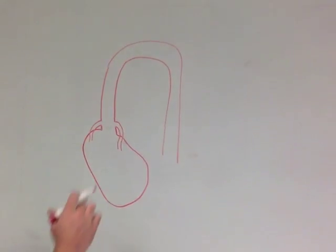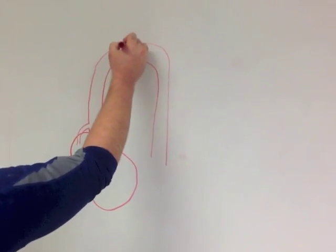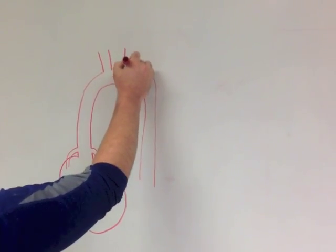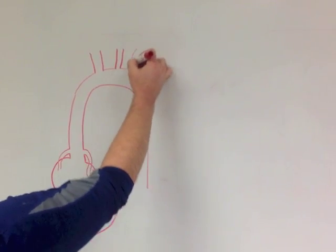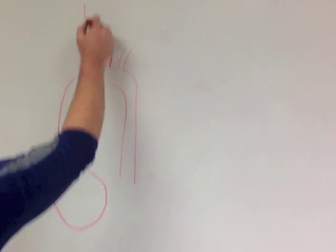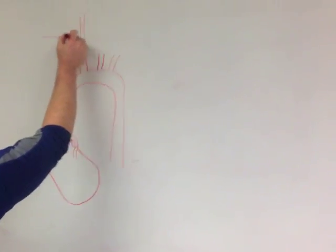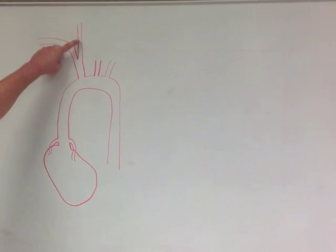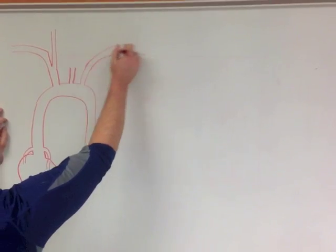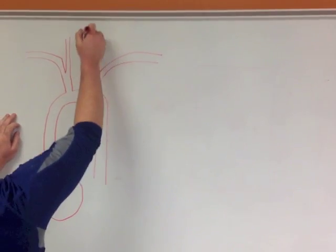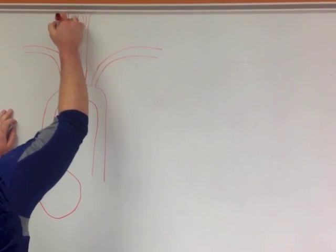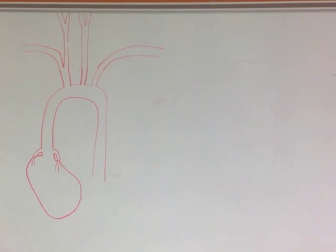As we get up into the aortic arch, we'll see the brachiocephalic trunk, followed by the left common carotid and left subclavian arteries. That brachiocephalic trunk splits into the right common carotid and the right subclavian.